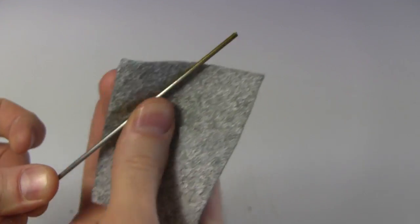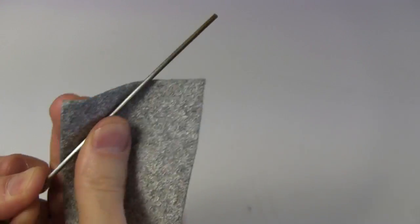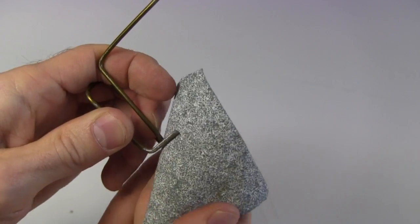The clothes hanger wire has a coating on it, so I sand it where the electrodes will contact it and where I'll be connecting a wire to it.